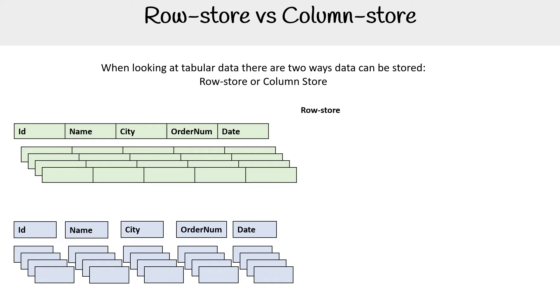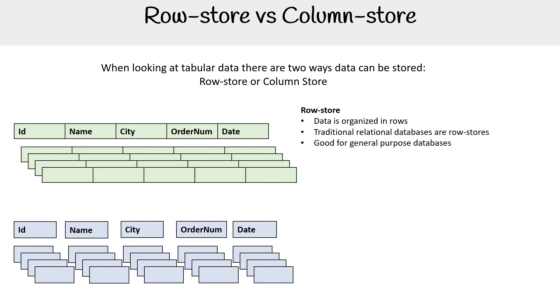In the first case, we have row store — the data is organized in rows. This is great for traditional relational databases, which are row stores, and it's good for general-purpose databases suited for online transaction processing, OLTP.